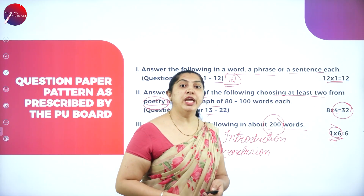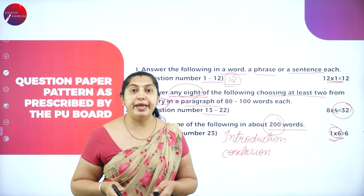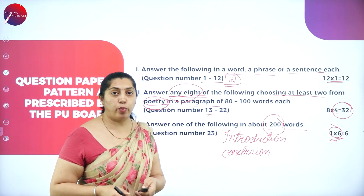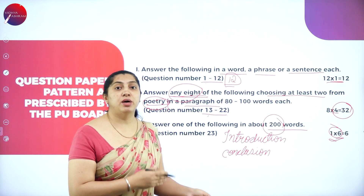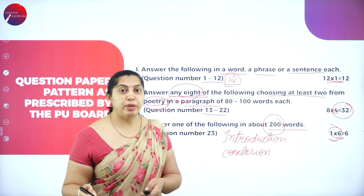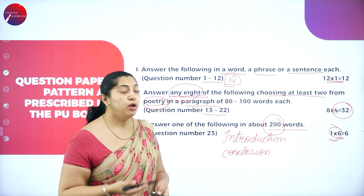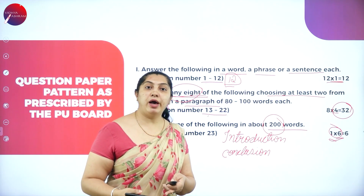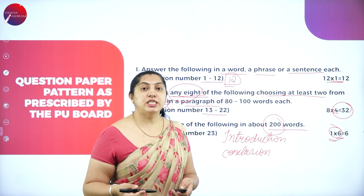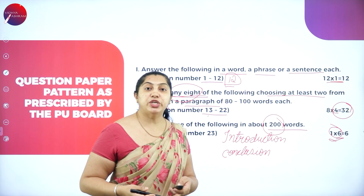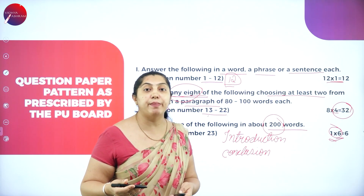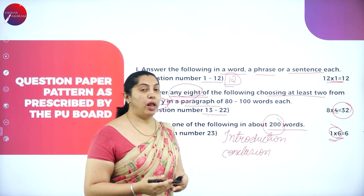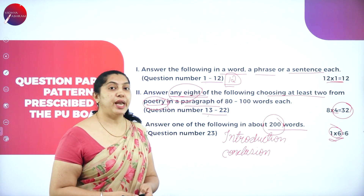From literature, you'll be attending for 50 marks. The pattern is: 12 one-mark questions, 8 four-mark questions, and 1 six-mark question. Unlike other subjects, there are no two-mark or three-mark questions here — only one, four, and six.